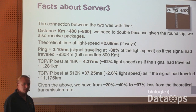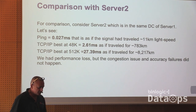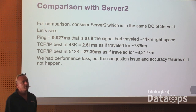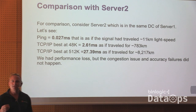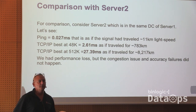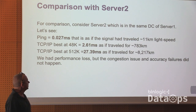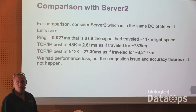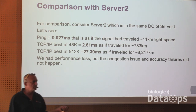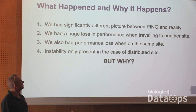When you design DR, you should think about these things. What happened on server 2? On server 2, we have a similar thing — not as strong or significant, but still the same kind of performance decrease. But the difference is the network is stable, so you can tune things to work around it. Summarizing: significant difference between ping and reality. We had a huge performance loss when traveling to other sites, and then network instability. But why?